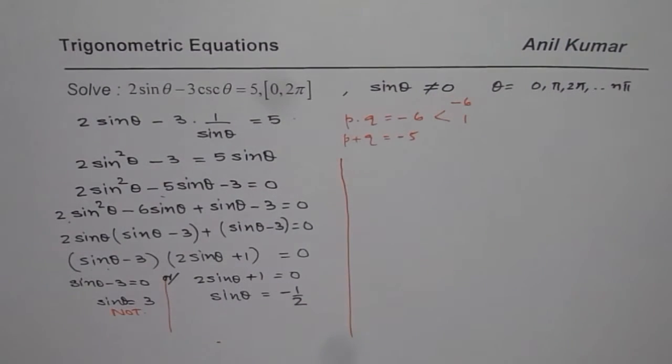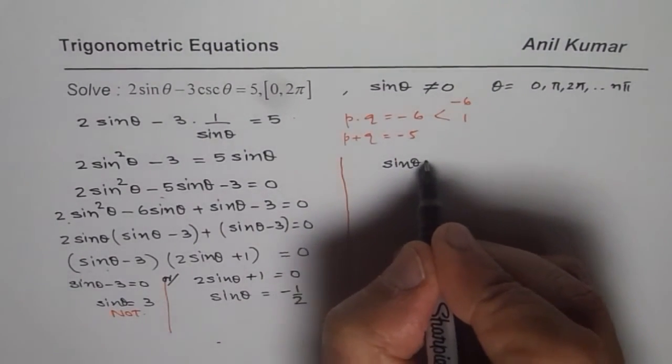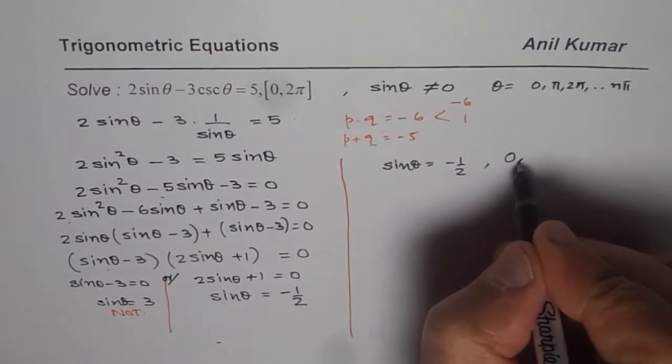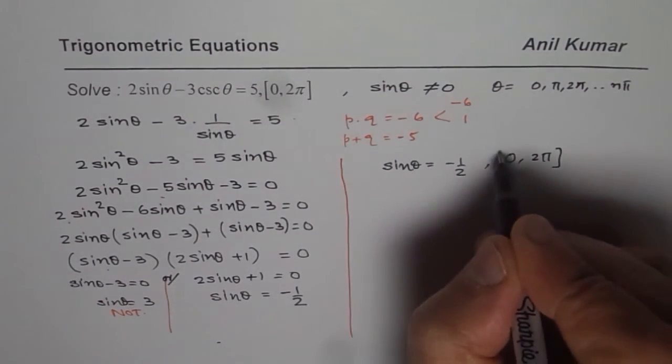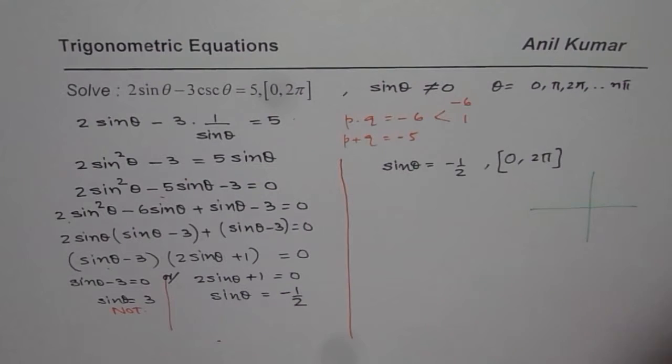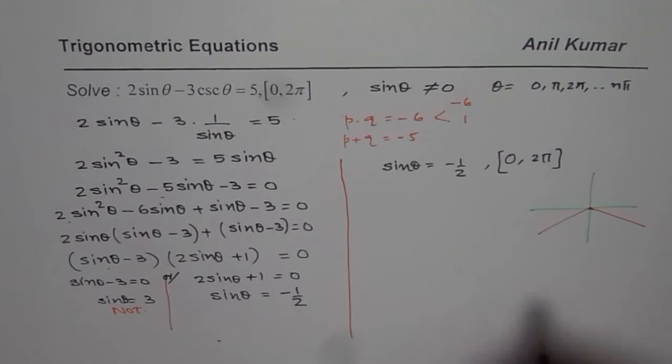So let us see how to find solutions for sin theta equals to minus half and we are working in the domain from 0 to 2 pi. Now as you know, sin theta is negative in two quadrants. In quadrant 3 and in quadrant 4. So we are looking for something in quadrant 3 and something in quadrant 4.